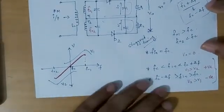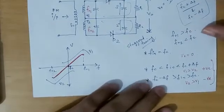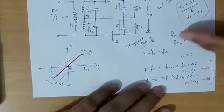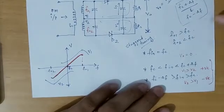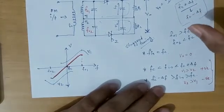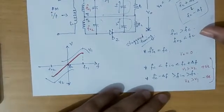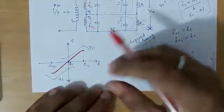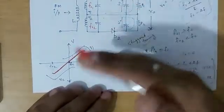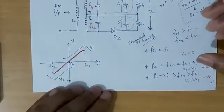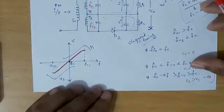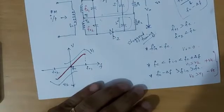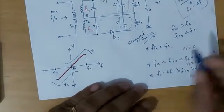The single slope detector's main drawback is a non-linear frequency-to-voltage relationship. The balanced slope detector overcomes this by providing better linearity over a larger frequency deviation range. The circuit is more efficient than the simple slope detector and can handle higher frequency deviations.